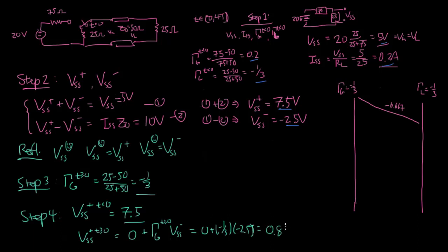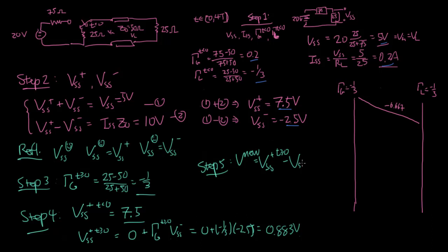That's going to give us 0.833 volts. The newly launched wave will be the difference between these two: V_new equals VSS plus at T greater than or equal to zero minus VSS plus at T less than zero, which is 0.833 minus 7.5. And that is how we get minus 6.667 volts.